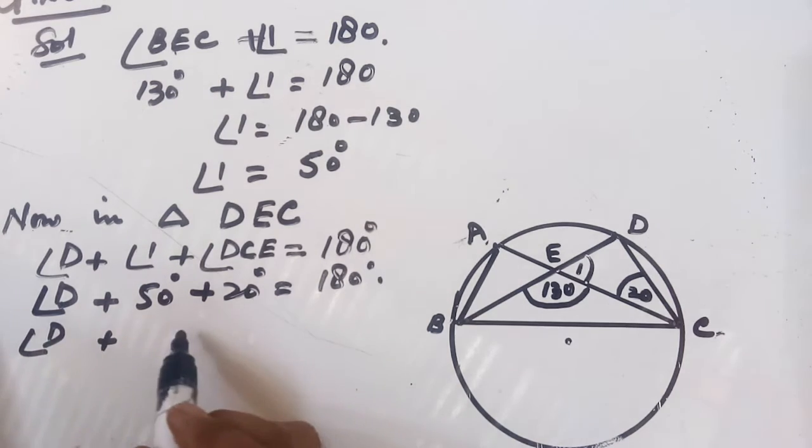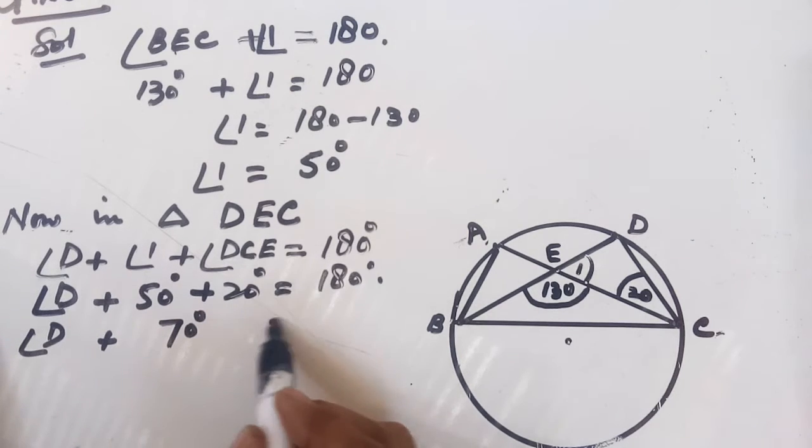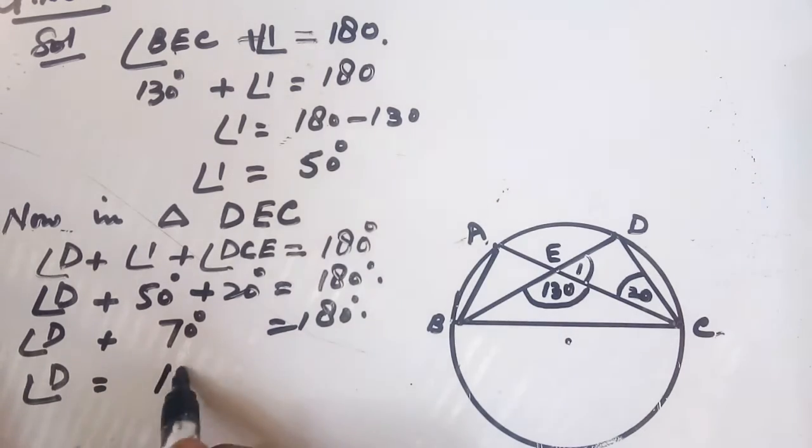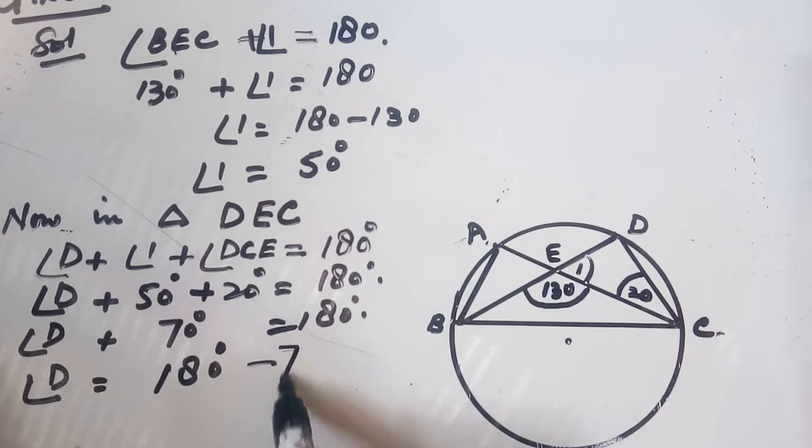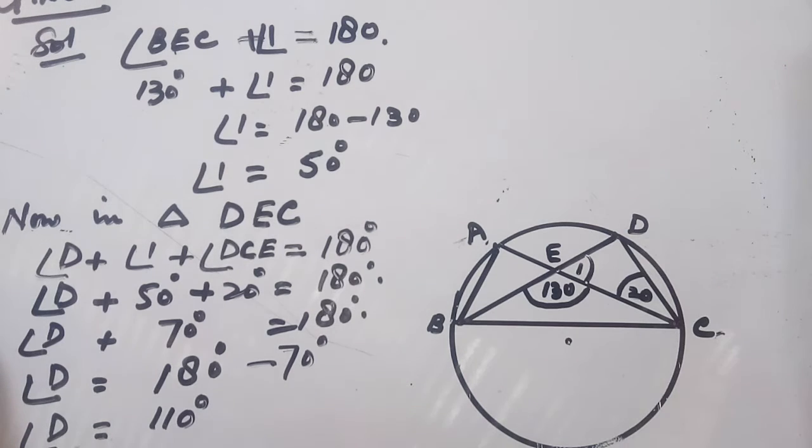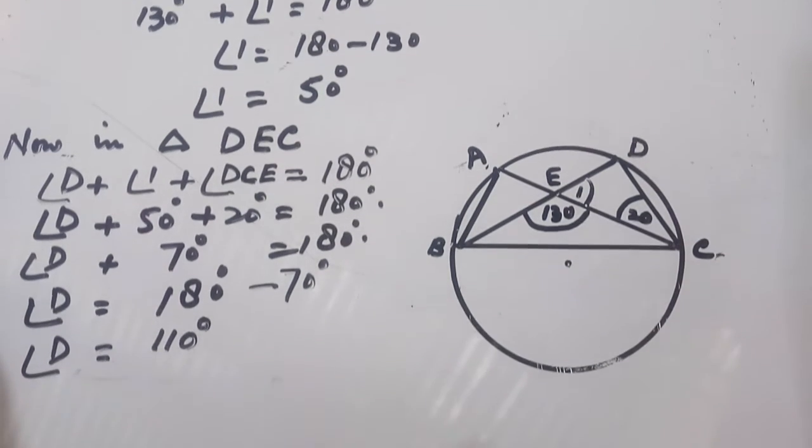So angle D plus 70 degrees equals 180 degrees. Therefore, angle D equals 180 minus 70, which is 110 degrees.